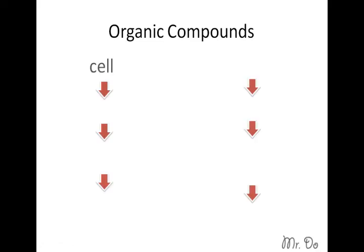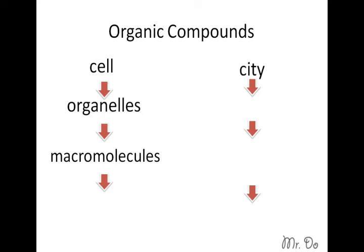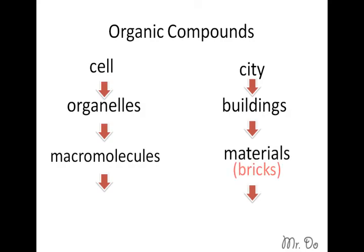So inside a cell, the organelles make up the cell, and the macromolecules are the little stuff that makes up the organelles. In a city, the buildings make up a city, and materials make up the building, for example, bricks. Bricks are made up of smaller things like mud and sand. So what are smaller than macromolecules that make up macromolecules? It's the elements.